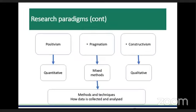In the middle you have pragmatism, which essentially says that there are certain components of this knowledge that you cannot change — that are very structured — but there is another component of this knowledge that you can create, and that you can change and alter according to how phenomena change over a period of time. So pragmatism is a combination of positivism and constructivism that uses a mixed method approach, meaning you have both quantitative and qualitative methods and techniques being used to identify and discover the knowledge you are looking for.